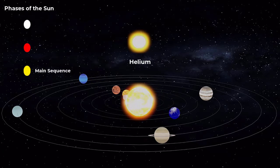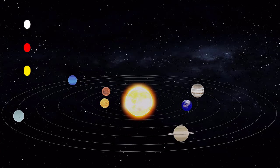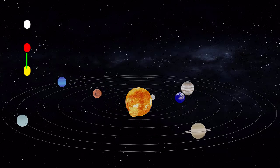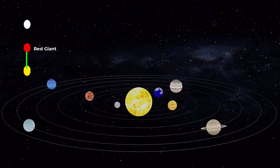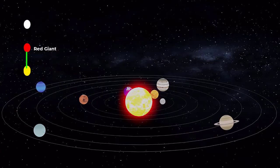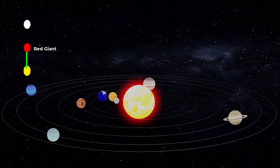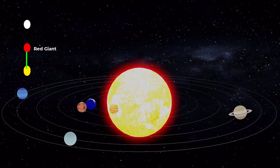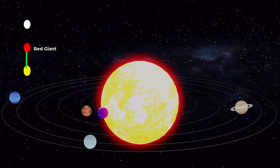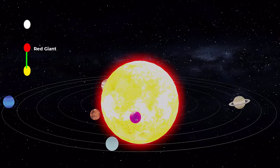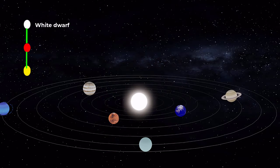When the Sun eventually runs out of hydrogen in its core, it will enter a new phase called the red giant stage. It will expand considerably, likely engulfing Mercury and Venus, and its increased heat will render Earth uninhabitable, and then collapse into a small star known as a White Dwarf.